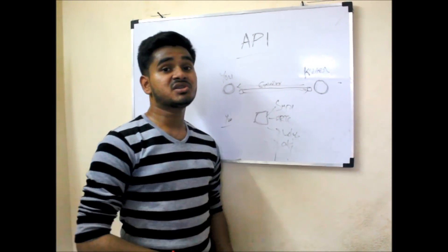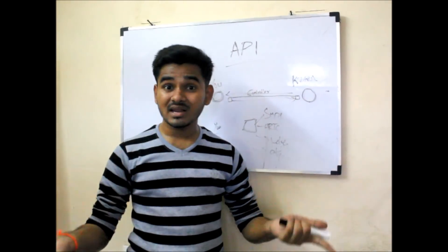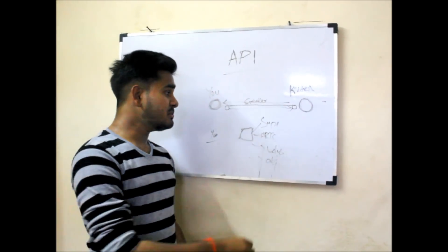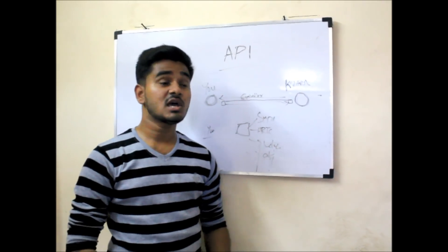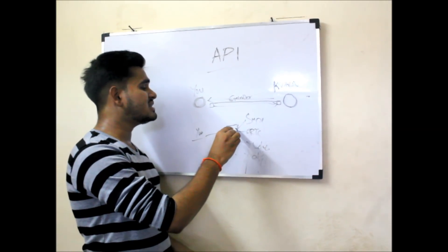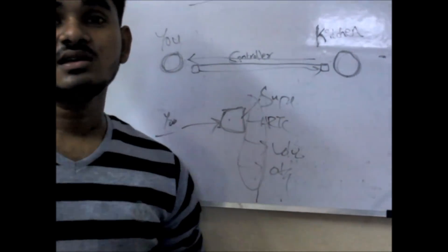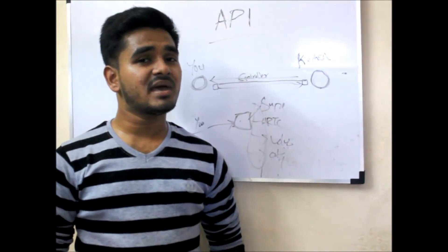Simply, they all created application program interfaces so that if you search for details, immediately the API searches all these and gives you the result. See, this is how actually APIs work.